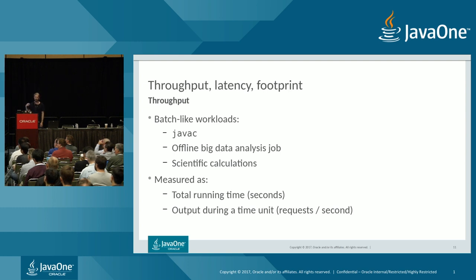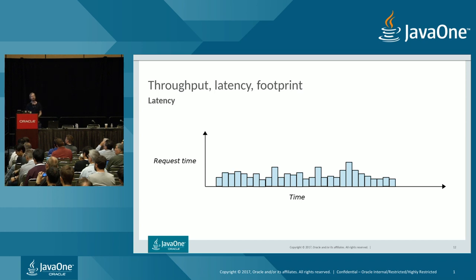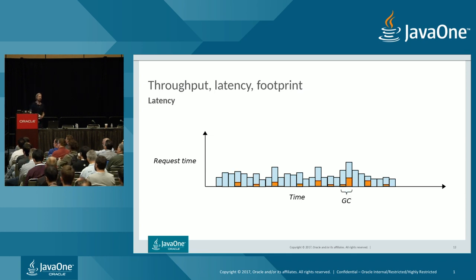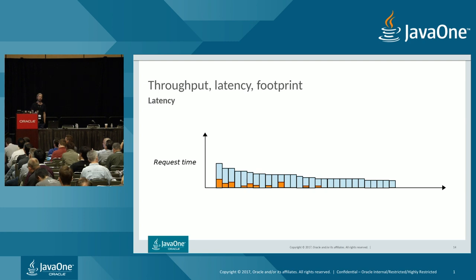The second property is latency, which is especially relevant for network or backend services where you measure request time — how long from when a user starts loading a web page until they get a result. GC contributes to this because if the garbage collector pauses the application, that pause adds to the request time. We often visualize this with a diagram: X axis is time, Y axis is request time.